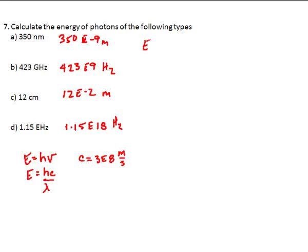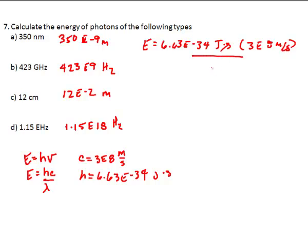And we just plug it in. 6.63 E to the negative 34th, Planck's constant. This is in joules per second. And then I'm going to multiply it by c, which is 3E to the 8th meters per second. Seconds cancel. Over 350E to the negative 9th meters. The meters cancel. So, a is 5.68E to the negative 19th.